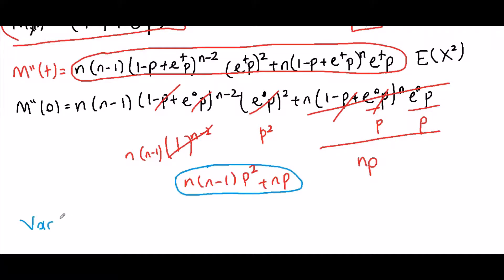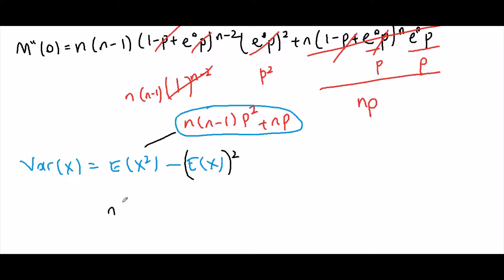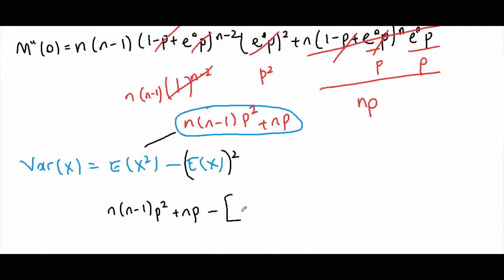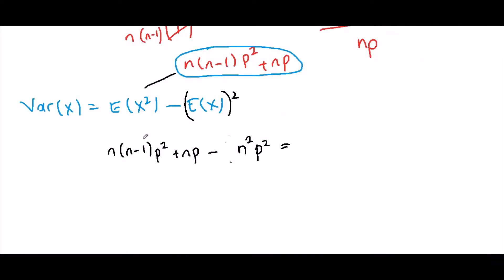Now, variance by definition is equal to E[x²] minus (E[x])². So E[x²] is n(n−1)p² plus np, minus (np)², which is n²p². If we distribute and simplify, we obtain n times p times (1 minus p).